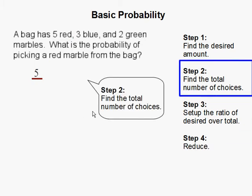Step 2: Find the total number of choices. Together there are 5 reds, 3 blues, and 2 green, so we have 10 choices total.